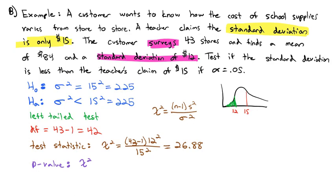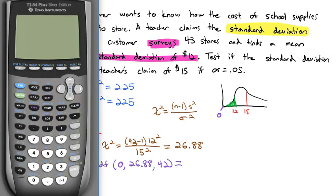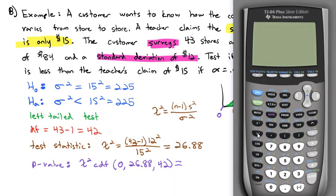It's a chi squared CDF. Normally with chi squared, we go from smallest to largest. Here the smallest value on the chi squared is going to be 0, to the largest value of 26.88, our degrees of freedom we said was 42. And let's see what the calculator gives us for that value.